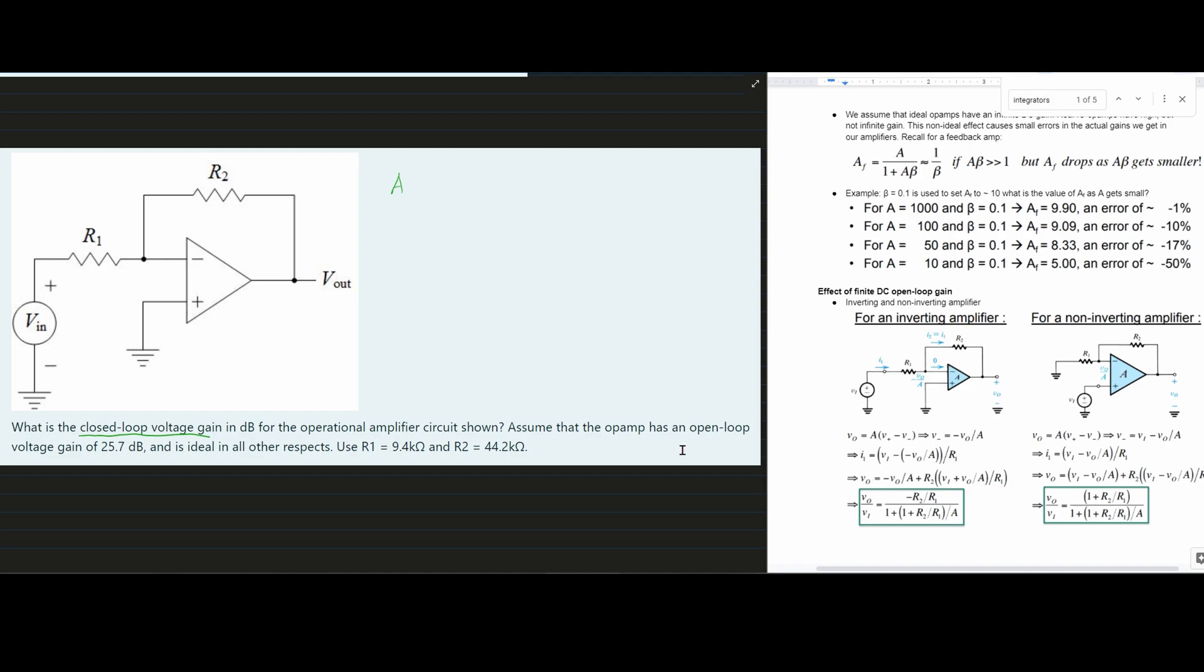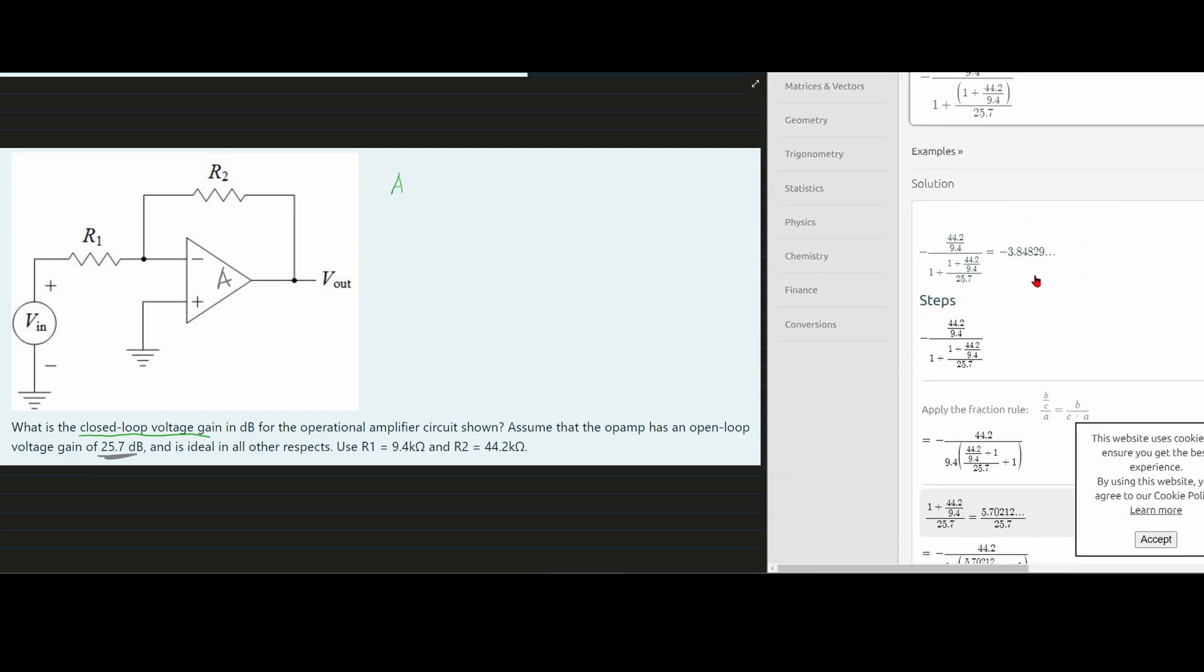And then we have our open loop gain. And the open loop gain is just the value that's sitting right here. That is this. So we have 25.7 dB. So we could plug all this into a calculator, which I have done here. We get a negative 3.8 approximately.